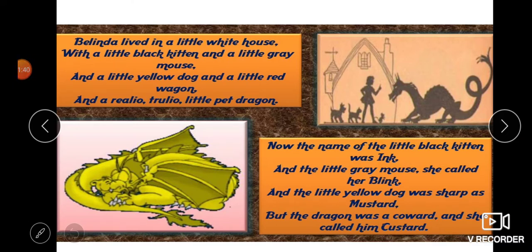The poet says there is a girl called Belinda who lived in a little white house. She has a little black kitten, a little grey mouse, a little yellow dog, and a little red wagon vehicle. In all, she has four animals — a dragon, a dog, a kitten, and a grey mouse — plus the little wagon.